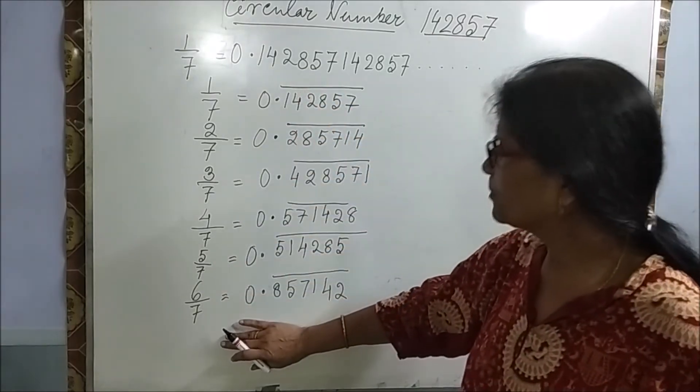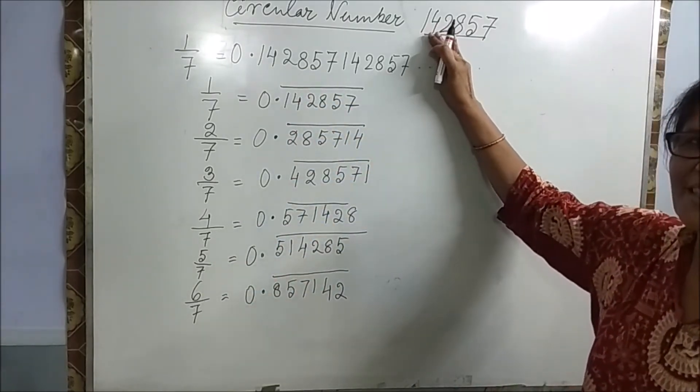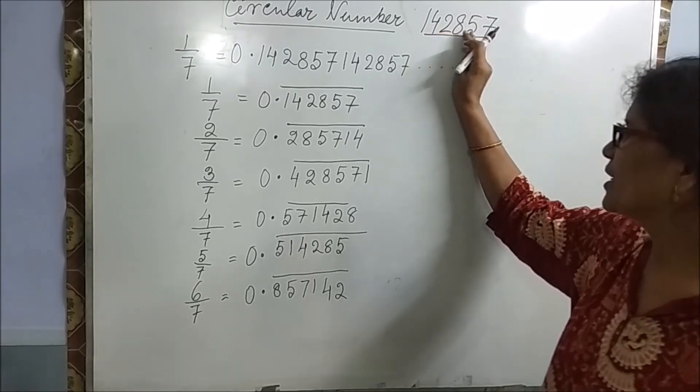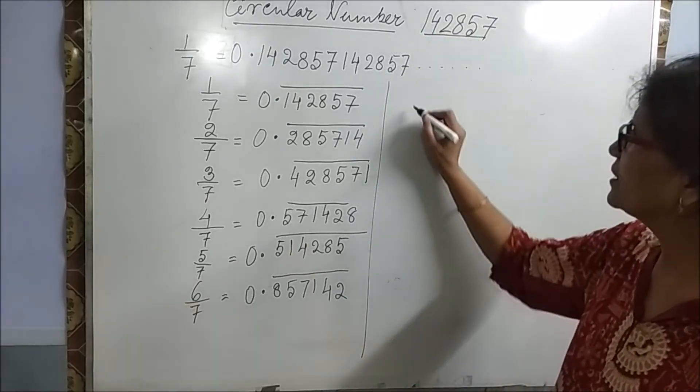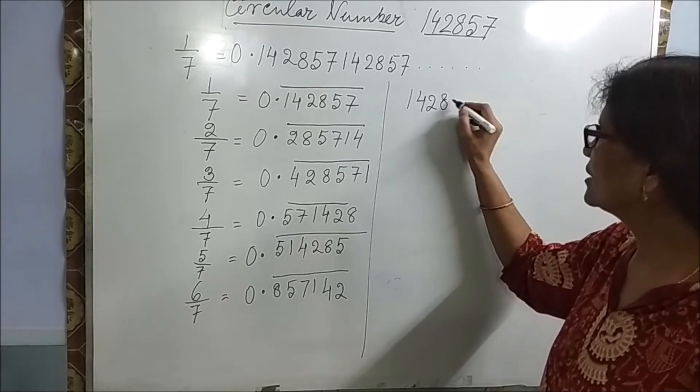Find all the parts because due to this number. This is 1, 4, 2, 8, 5, 7. We call it a circular number.